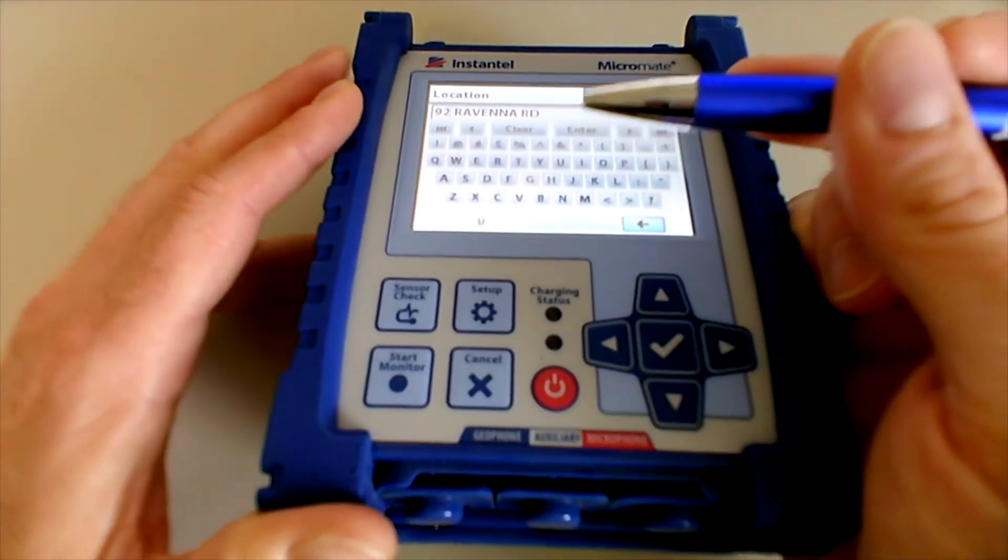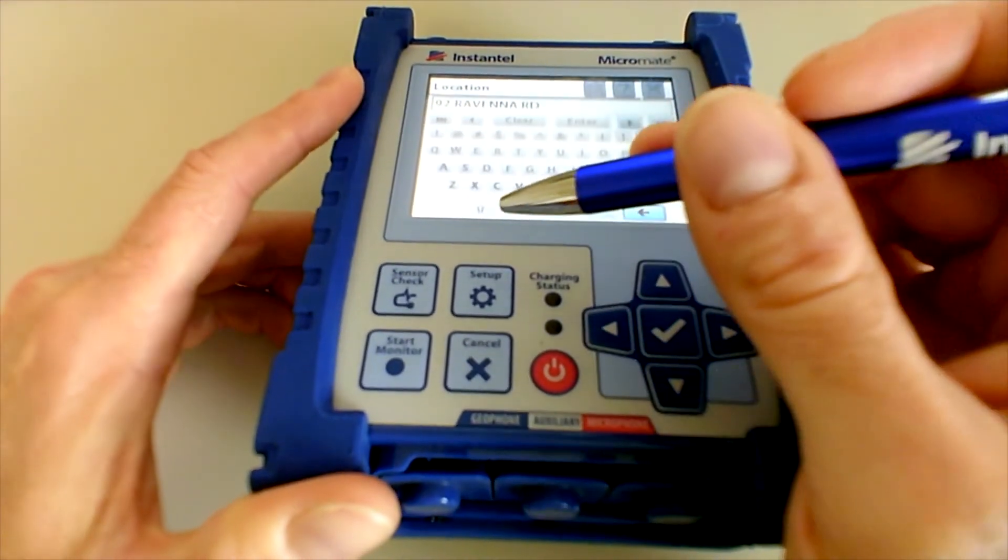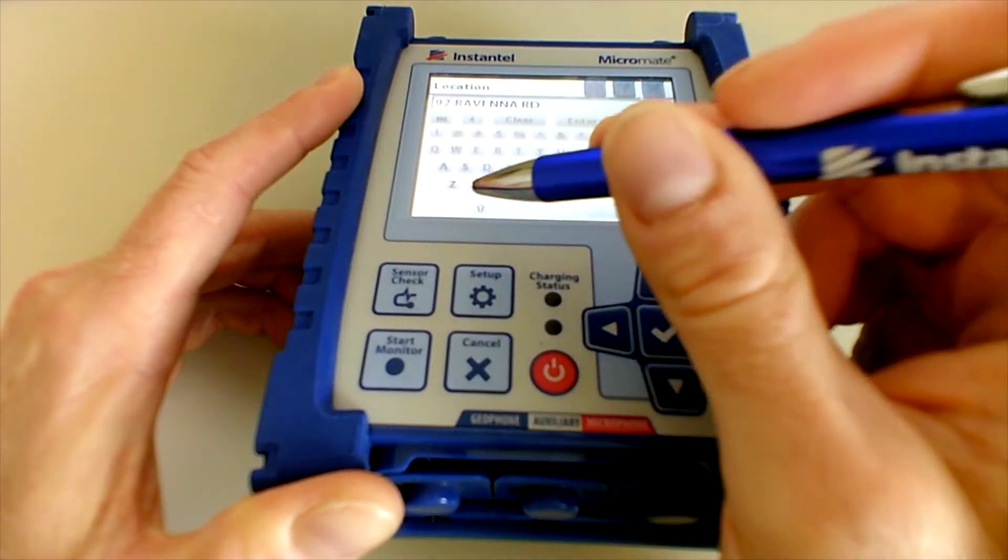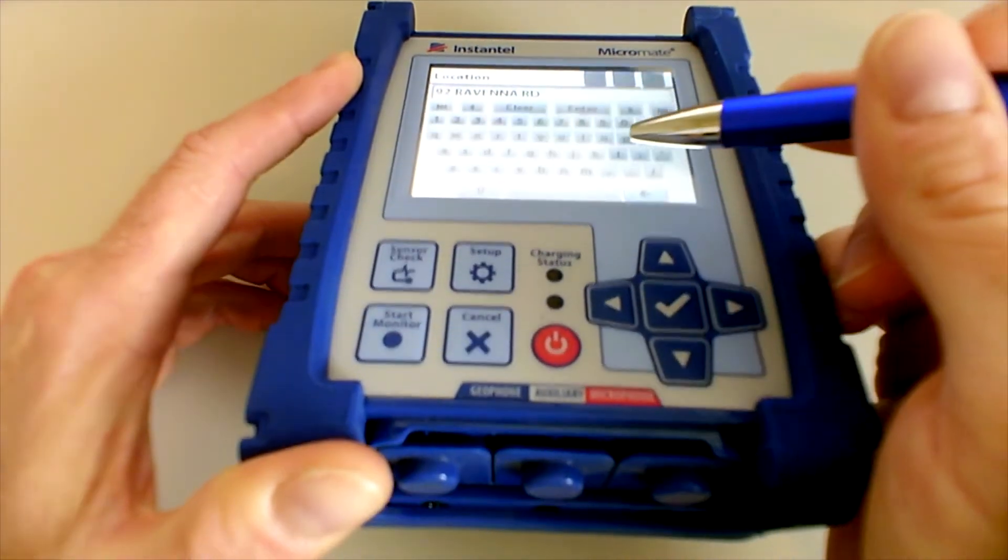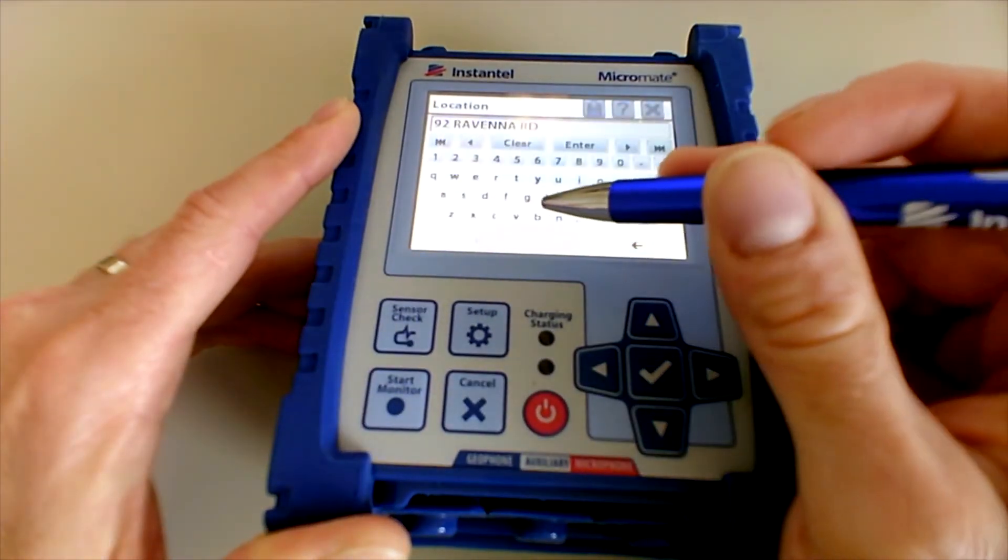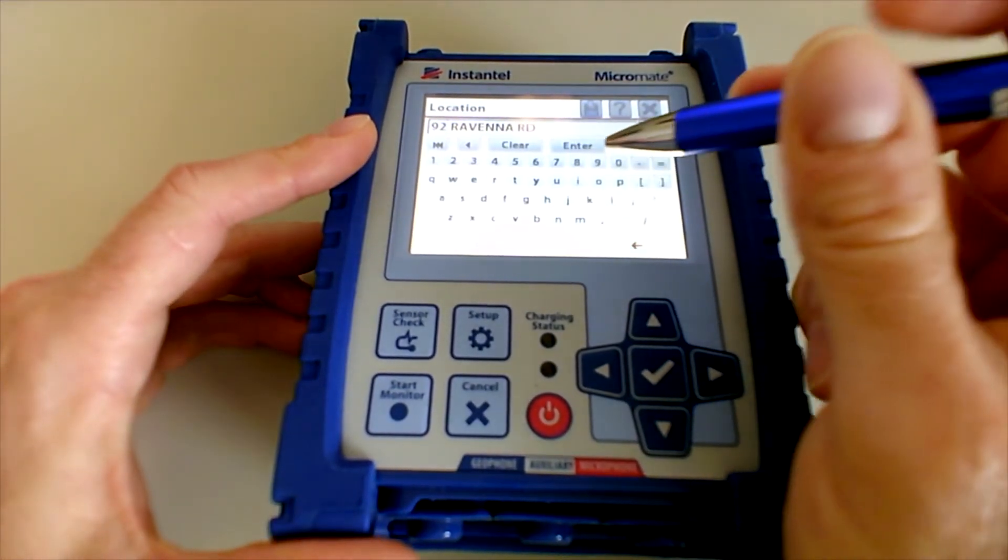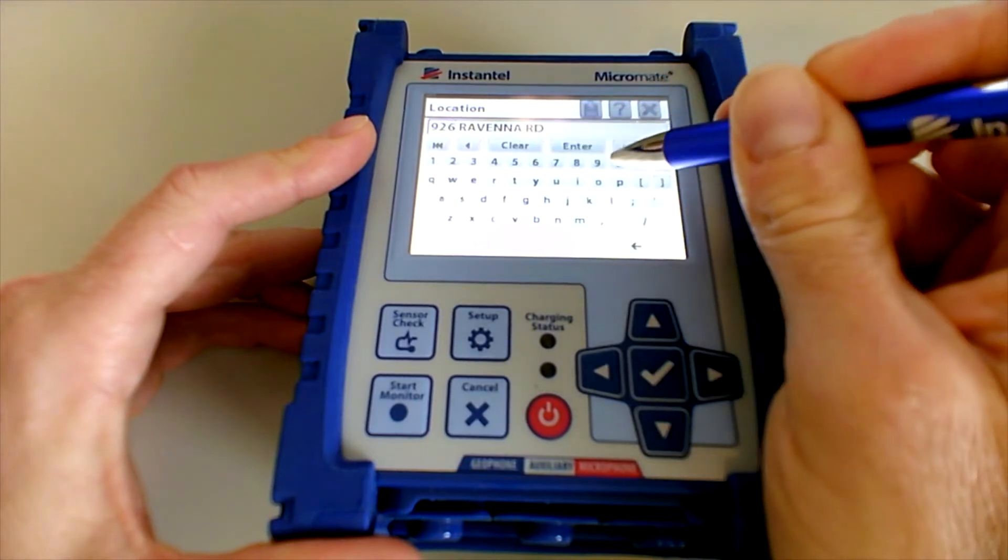In order to access the numbers, you will use the shift button. That's just to the left of the space bar. Shift button also gives you access to lowercase characters, as well as numbers. We're going to change this to 60. Six, zero.